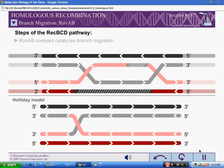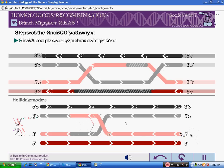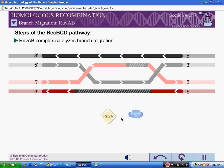The next step of the REC-BCD pathway is branch migration. This step is similar to that of the Holliday model, except it can involve two Holliday junctions instead of just one. In the REC-BCD pathway, this step is catalyzed by two proteins, RUVA and RUVB, which form RUVA-RUVB complexes at Holliday junctions.